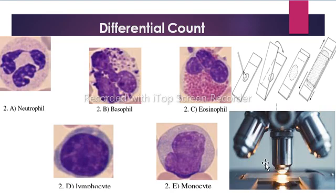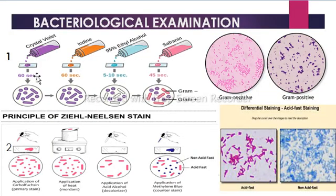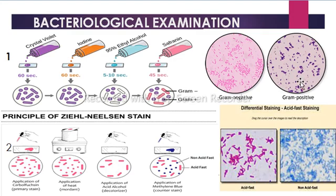One hundred cells are counted and the percentage of each cell type is recorded. Turbid samples are used for gram staining, in which crystal violet, iodine, 95% ethyl alcohol, and safranine are used for smear preparation and staining. Under microscopy, pink color indicates gram-negative bacteria and purple color indicates gram-positive bacteria. The smear can also be stained with Ziehl-Neelsen staining to determine whether bacteria are acid-fast or non-acid-fast. Bacteria with mycolic acids in their cell wall are acid-fast and retain pink color, while non-acid-fast bacteria lack mycolic acid and appear blue.